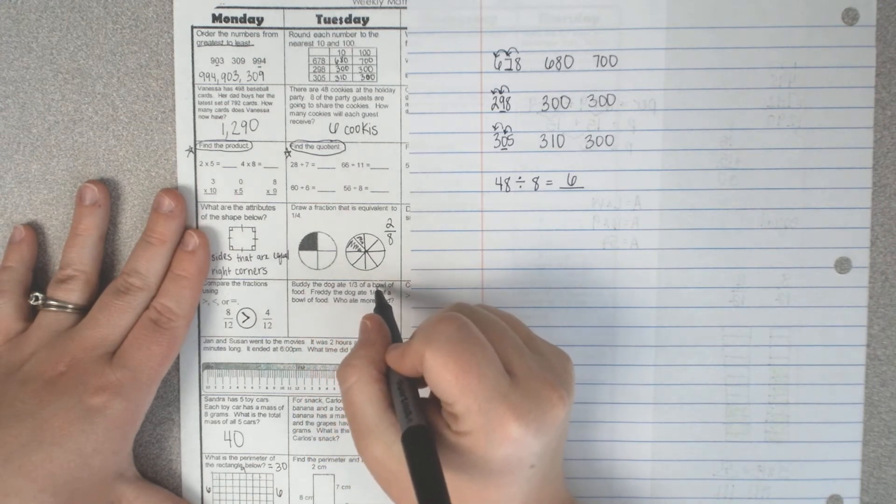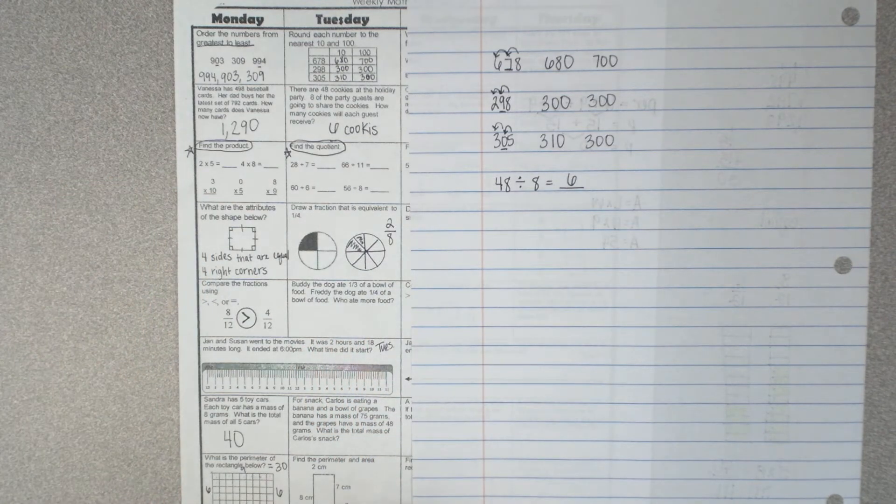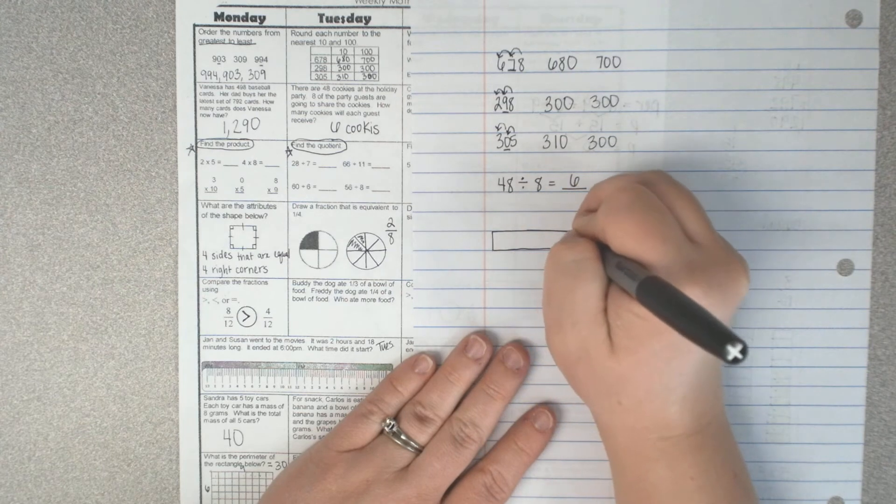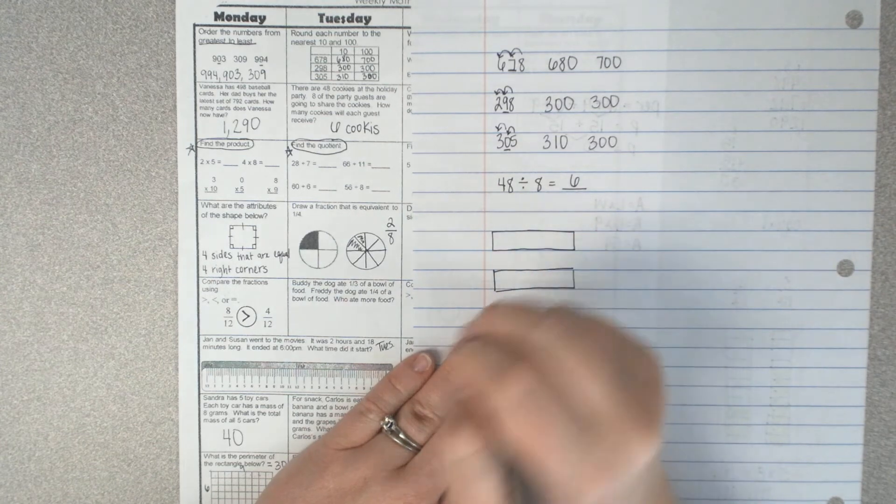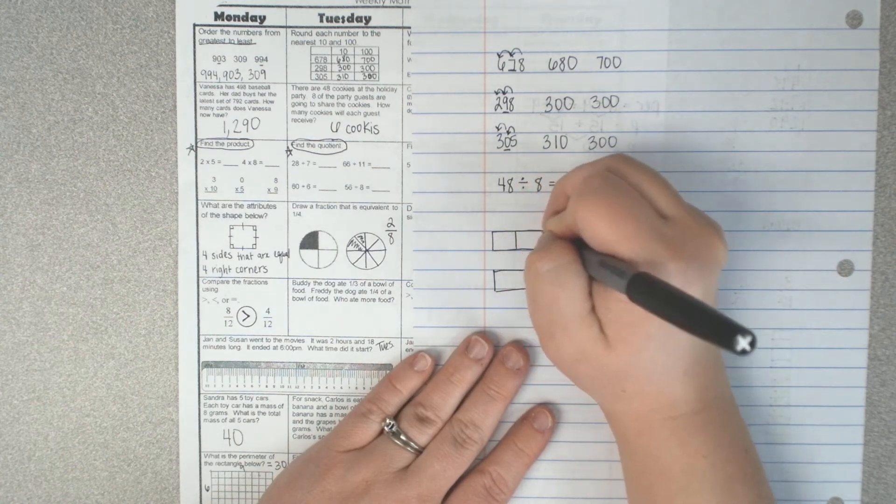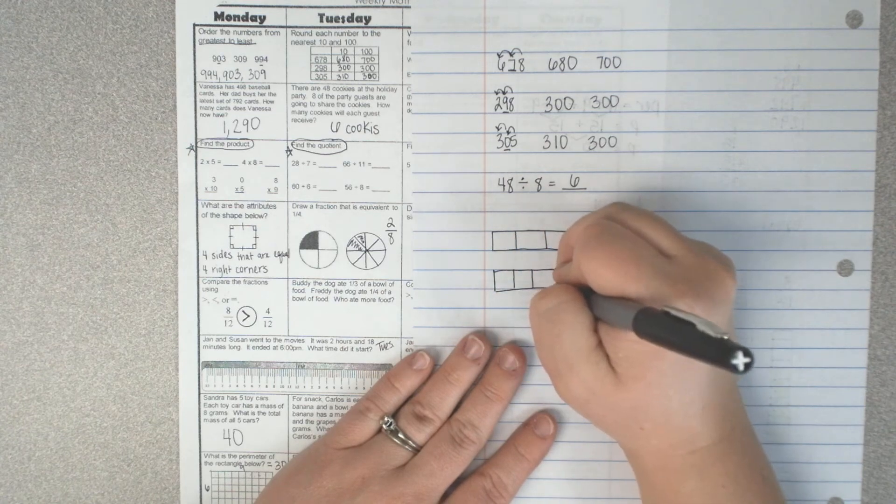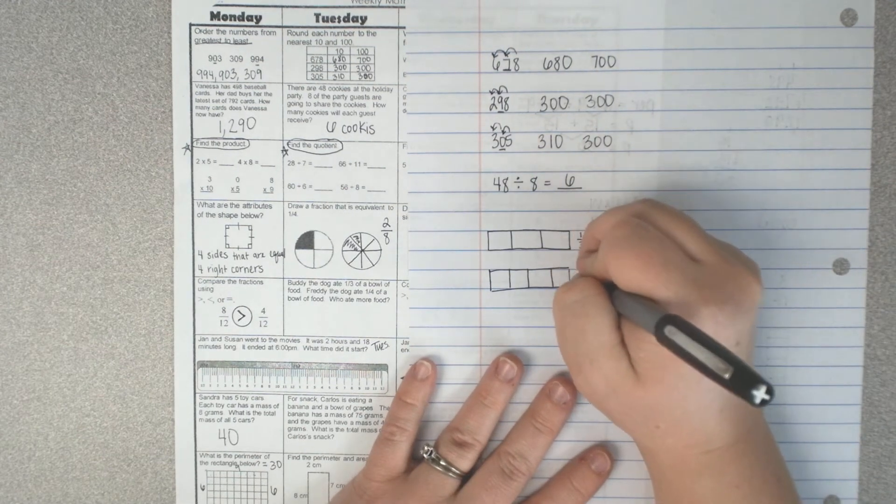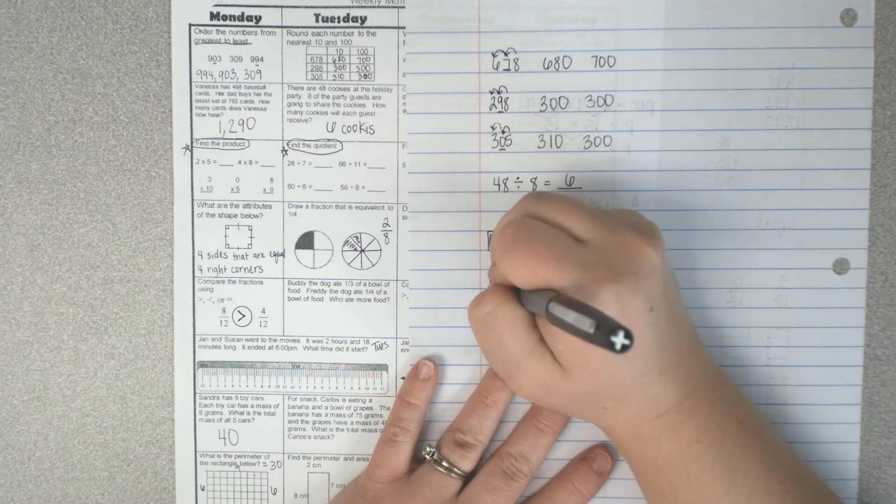Buddy the dog ate one third of a bowl of food, and Buddy the dog ate one fourth of a bowl of food. Who ate more? Now this one is different. Let's draw two tape diagrams the same length. Let's divide partitions one and two thirds and one and two fourths. We're going to fill in one third and one fourth.